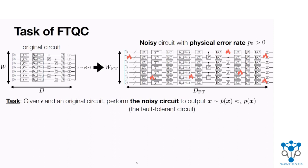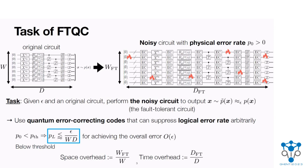FTQC deals with implementing the original circuit by a noisy quantum circuit with a non-zero physical error rate P0. Given epsilon and the original circuit, the task of FTQC is to perform the noisy circuit to simulate the original circuit with error epsilon. This noisy circuit is called a fault-tolerant circuit. The only known way to achieve this in a scalable way is to use quantum error correcting codes that can suppress the logical error rate arbitrarily. With quantum error correction, as long as the physical error rate is below a certain threshold constant, we can suppress the logical error rate as desired. For this error suppression, the fault-tolerant circuit may have more width and depth, and these ratios define the space overhead and time overhead respectively.